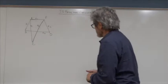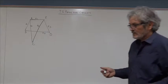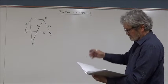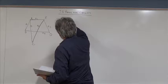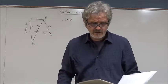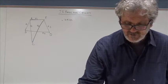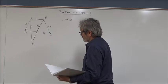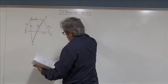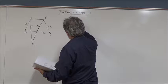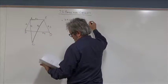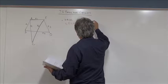Our topic for today is paths and circuits. There are a few definitions to begin with, illustrated using one graph. A walk is a sequence of vertices connected with edges, written as V0, edge E1, V1, edge E2, V2, edge E3, and so on, with the last edge EN connecting to the final vertex.